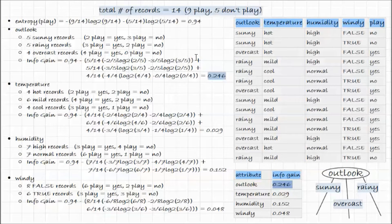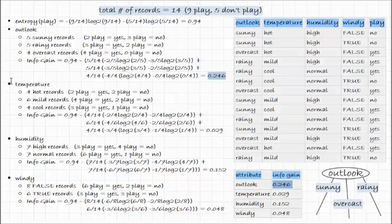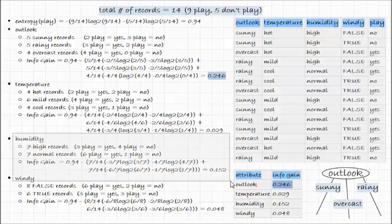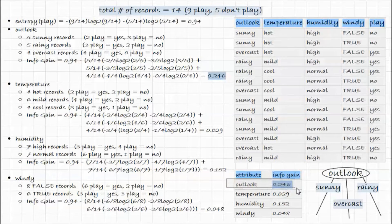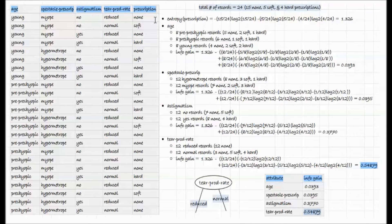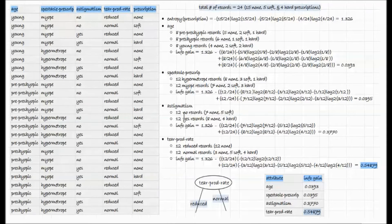We do the same thing for the rainy records and for the overcast records, and we end up with this number. We do the same calculation to see whether to split on temperature, humidity, or windy. It turns out that outlook has the highest information gain, so we split on outlook.